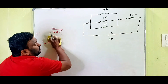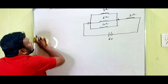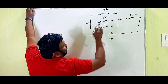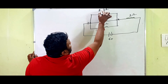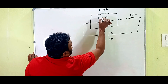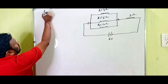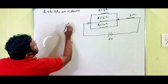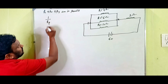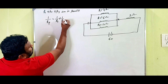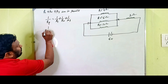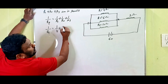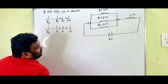First we have to find the current in the circuit. For that, we first find the equivalent resistance of the 4 ohms, 6 ohms, and 12 ohms in parallel. R1, R2, and R3 are in parallel, so: 1/R_effective = 1/R1 + 1/R2 + 1/R3. That gives us 1/4 + 1/6 + 1/12.